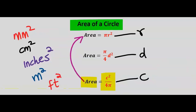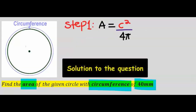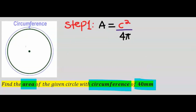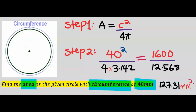The first step is to write out the formula for the area of a circle with a given circumference. Next, substitute: the area of the circle is 127.31 millimeters squared to two decimal places and five significant figures.